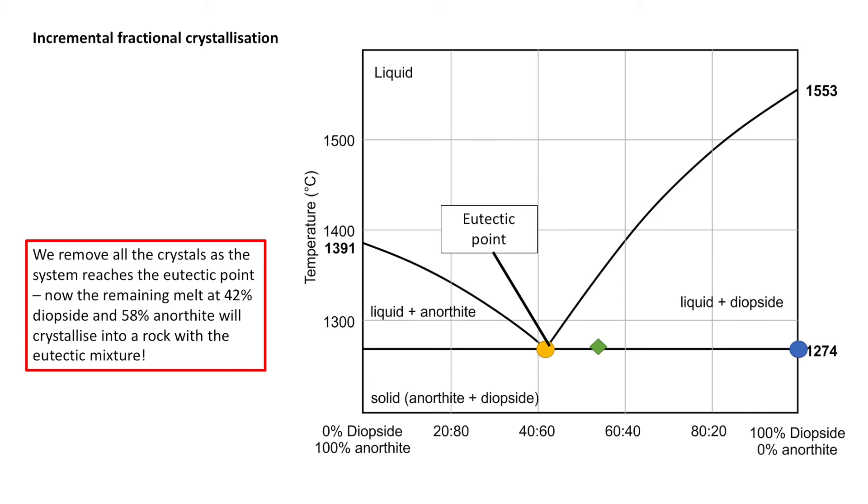So what happens if we get rid of every single diopside we've crystallized up until this point? But what would happen then? We're still crystallizing a eutectic mixture of both of these phases, 42% diopside, 58% anorthite. The system will shift onto the eutectic point and then it will eventually cool and we'll be left with a rock of 42% diopside and 58% anorthite.